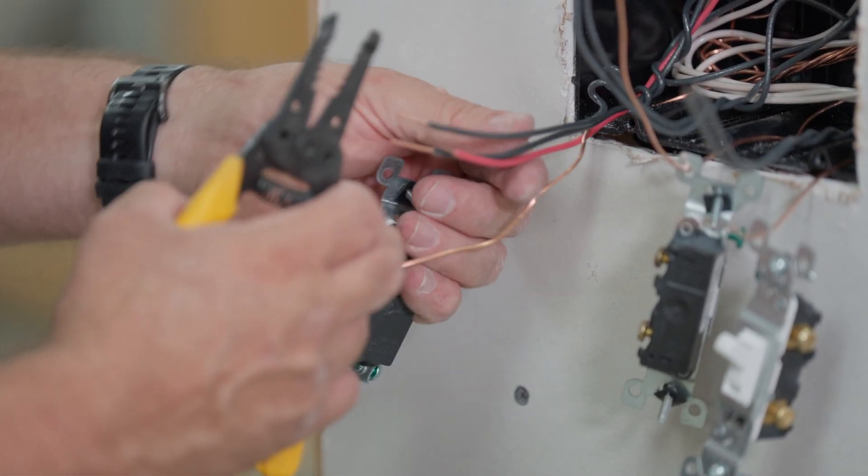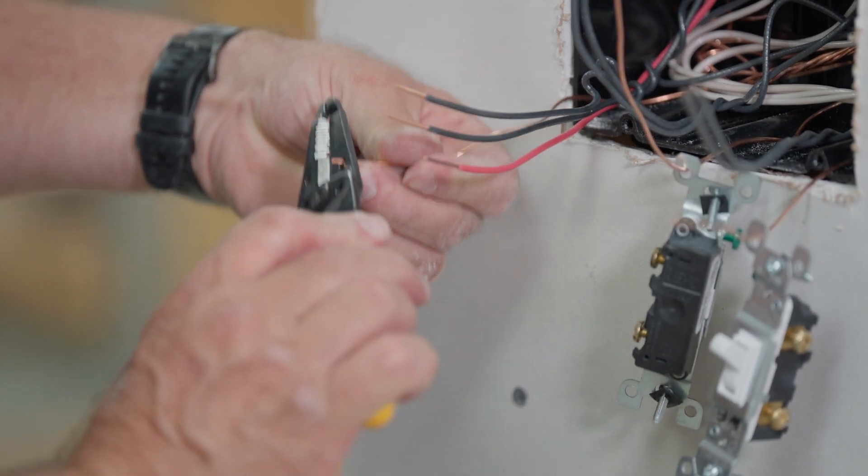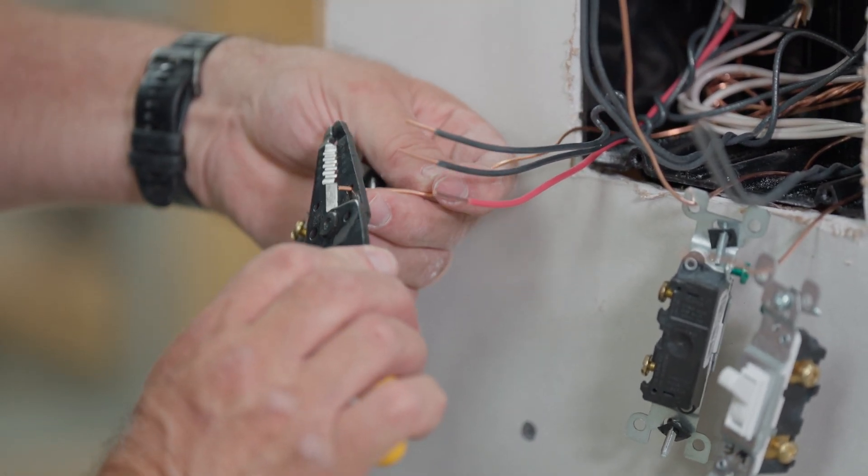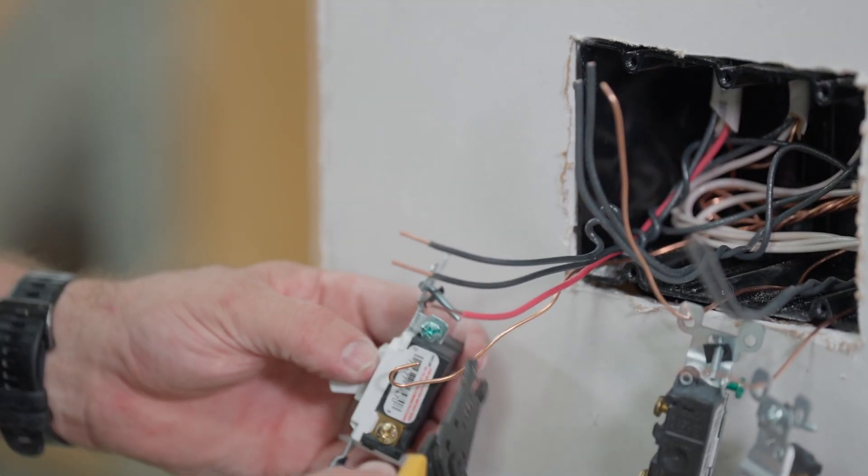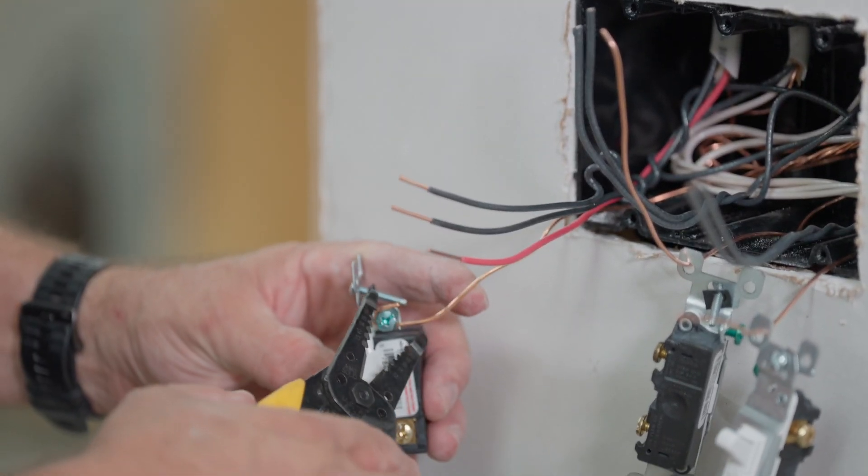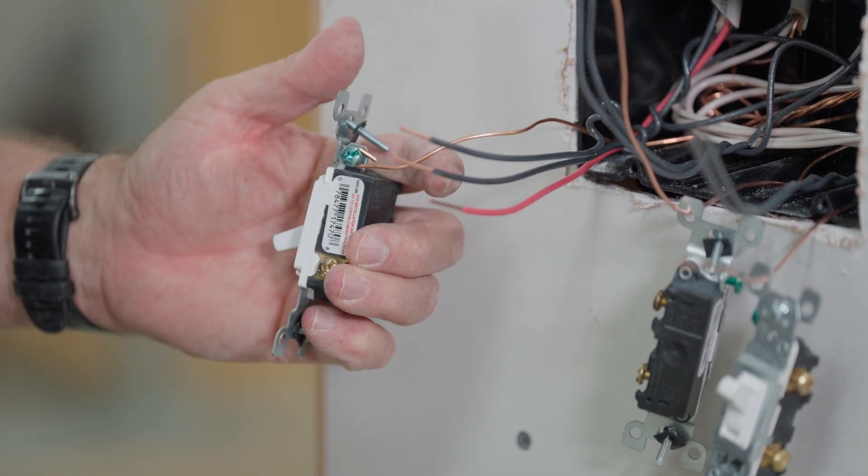Of course there's no stab-in for the ground. The ground wire has to be curled around, so we're going to take our strippers, use the hole in the top, and make a little curl just like that. Then we're going to find the ground conductor. Here it is. The ground terminal and the conductor right here.